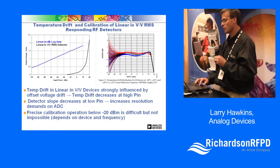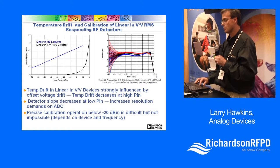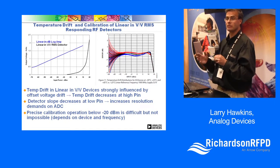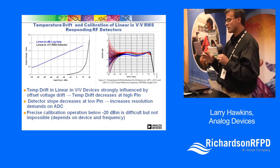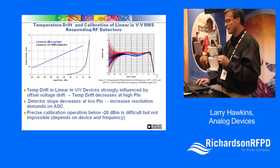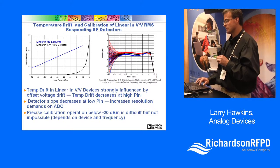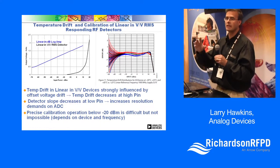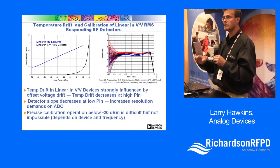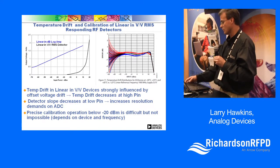As you go lower and lower in power level, you are further along the slope where the output isn't changing as much with power level. You also get more temperature variation at the lower power levels. You can calibrate a lot of this out — as shown by the black calibration line — but you won't eliminate all of the temperature variation at lower power levels.